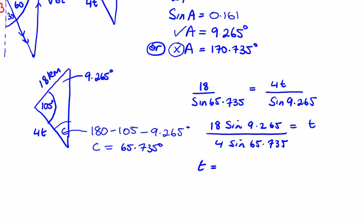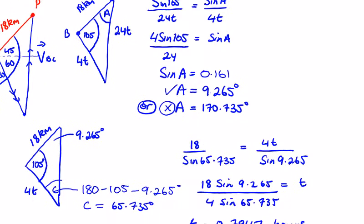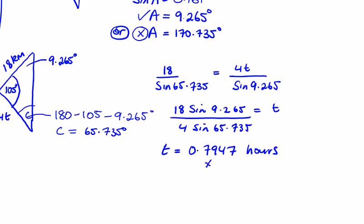This gives me the time to be 0.7947, and that's in hours. We're dealing kilometers per hour here. They want it to the nearest minute, so times 60 to give me my minutes, which is 47.682, and to the nearest minute 48 minutes.